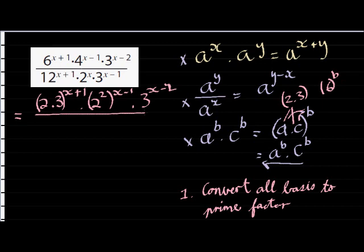And in the denominator we have 12. 12 can be written as 4 times 3, but 4 can be 2 squared. So 2 squared times 3 to the power x plus 1. And then 2 is already a prime number or a prime factor by itself. And 3 as well, to the power x minus 1.